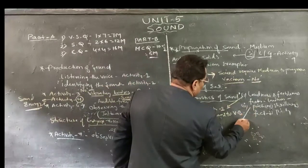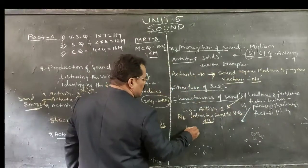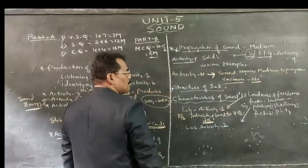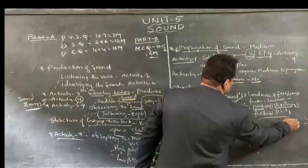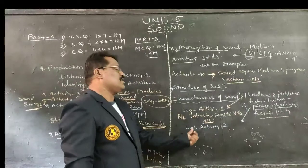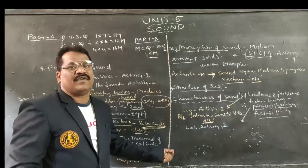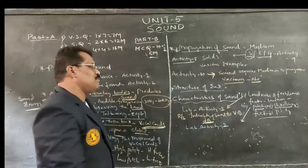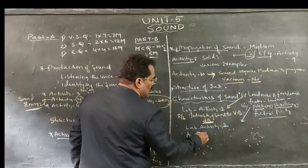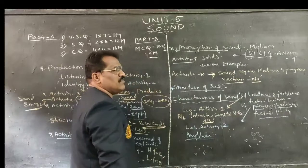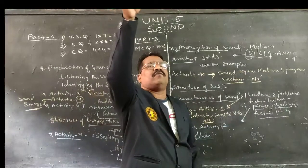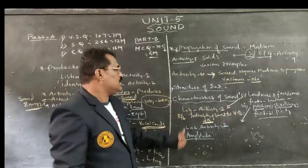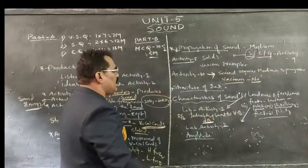Lab Activity 2 gives information about pitch and shrillness. If it is a low frequency, it produces low pitch. If it is a high frequency, it produces high pitch. It depends mainly on amplitude — the maximum displacement of a wave is called amplitude. Its factors have also been discussed clearly within Lab Activity 2.